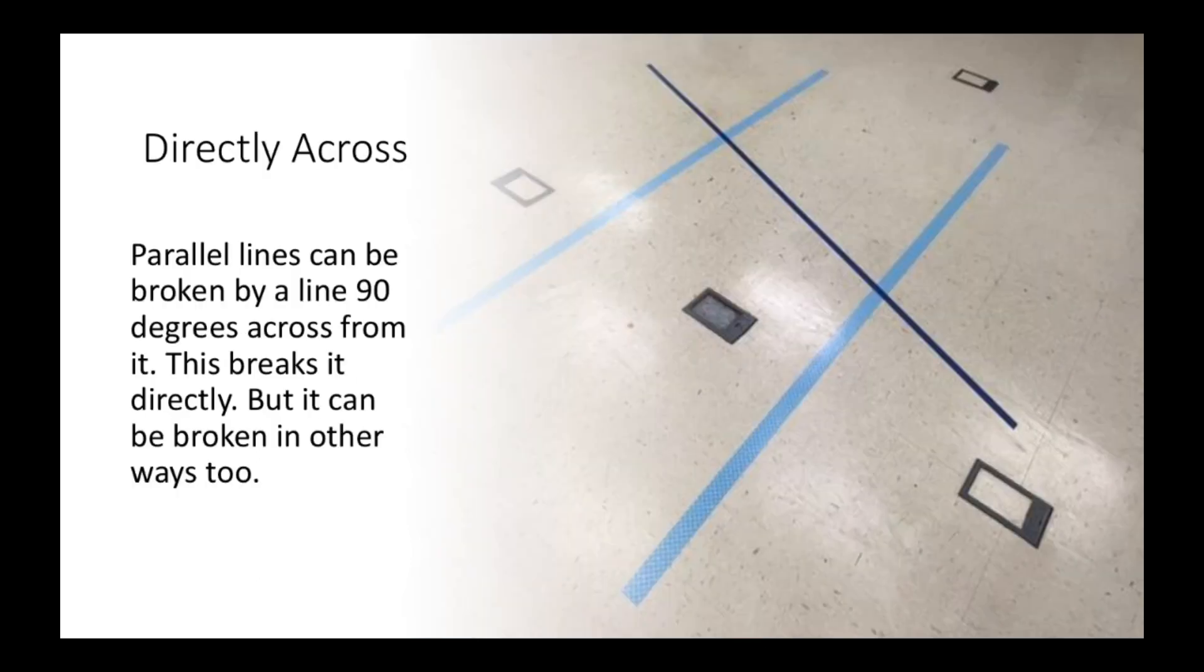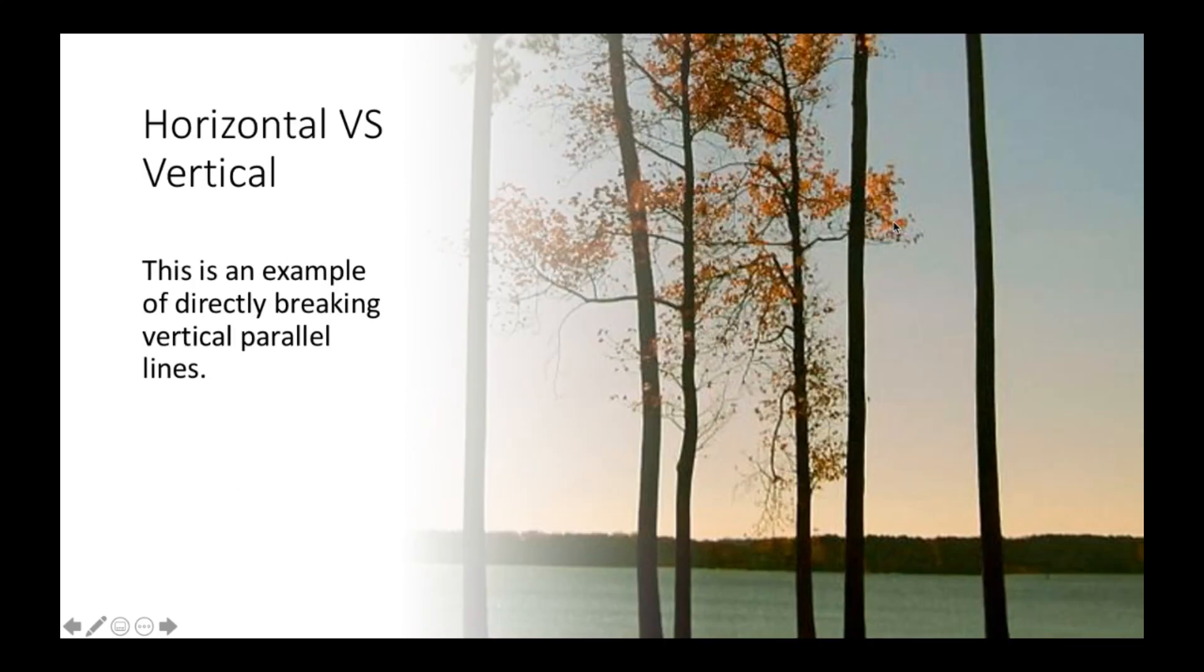Directly across is one way. Parallel lines can be broken by a line 90 degrees across from it. This breaks it directly, but it can be broken in other ways too. So this is obviously a line that breaks it directly across. Horizontal versus vertical. This is an example of directly breaking vertical parallel lines. So we have all these trees here that are basically parallel lines. They're not exactly the same, but you get the picture.